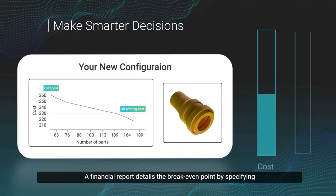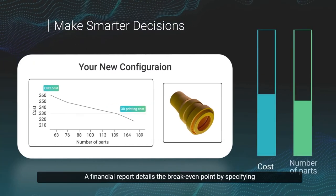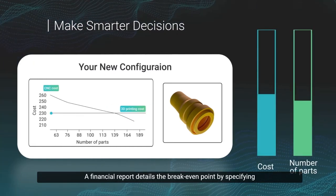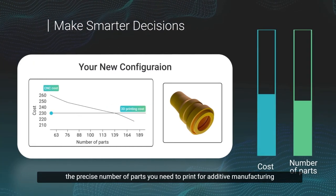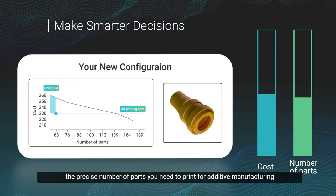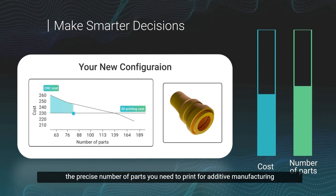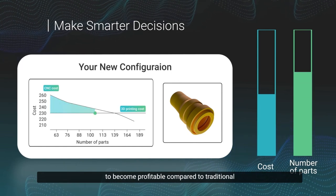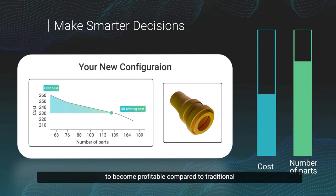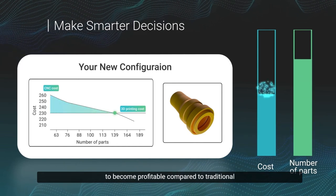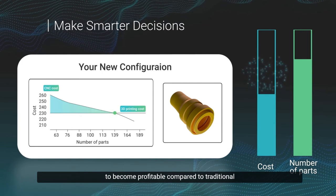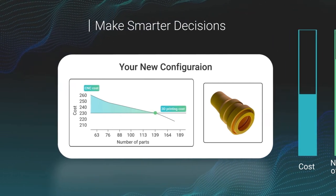A financial report details the break-even point by specifying the precise number of parts you need to print for additive manufacturing to become profitable compared to traditional manufacturing methods.